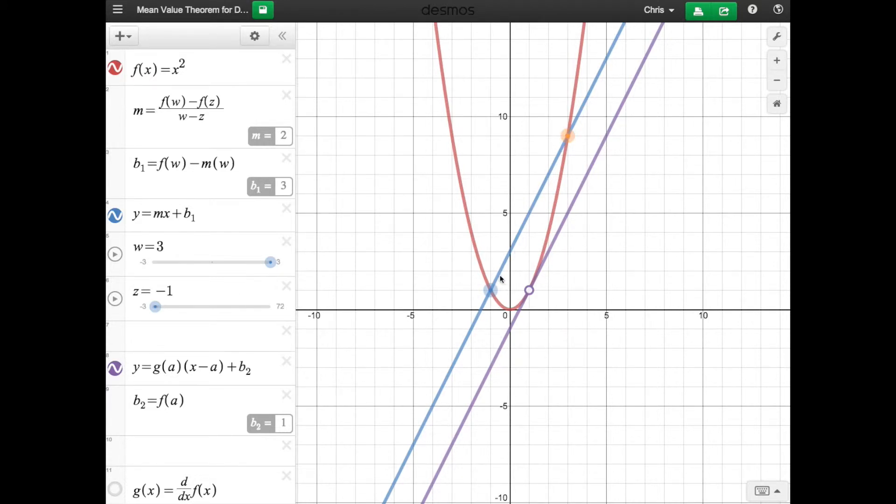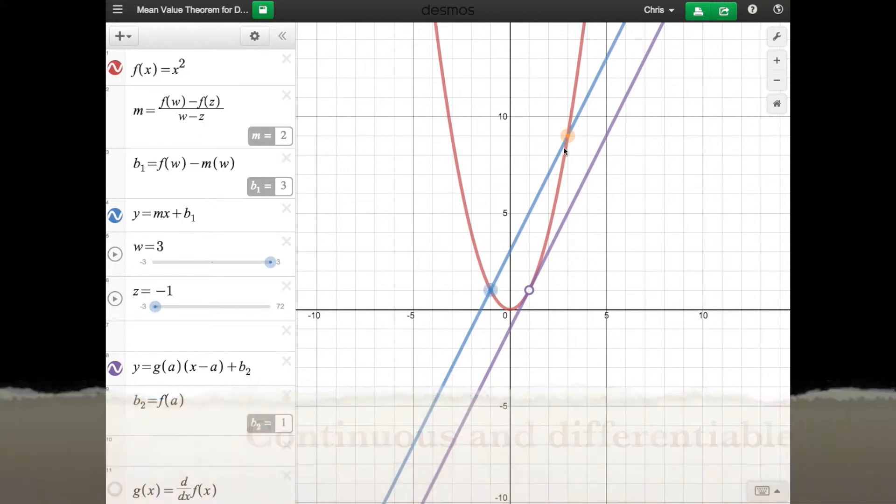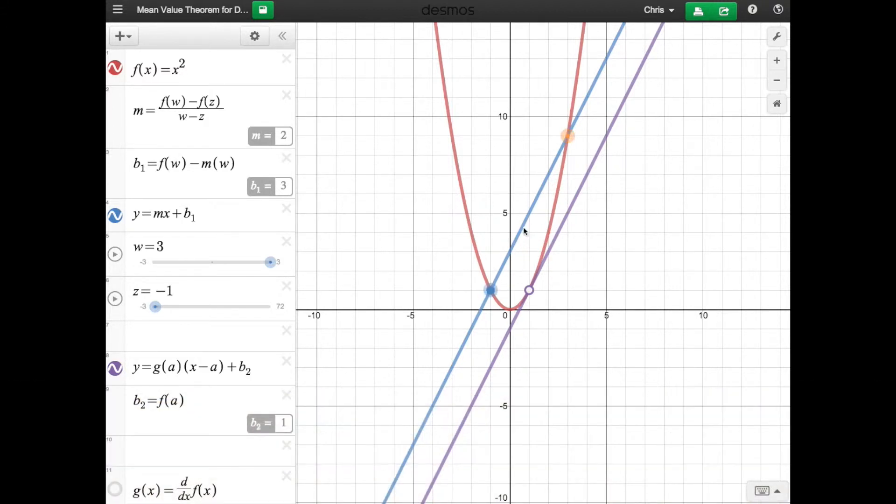that between any two points, if there is a continuous function between these two points right here, the slope of those endpoints, whatever the slope is, there's going to be somewhere where there is an exact same slope for the tangent line for that function that's in between those two points.